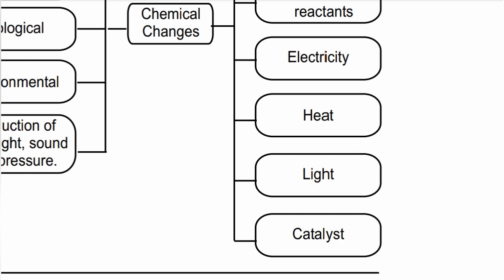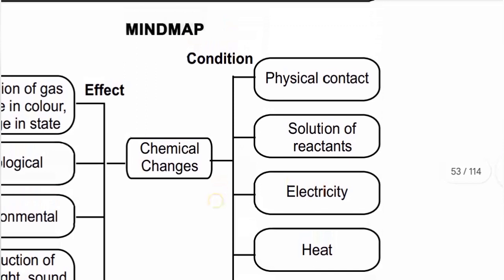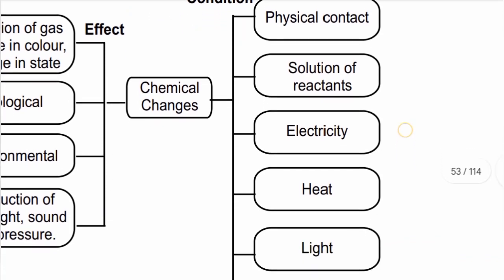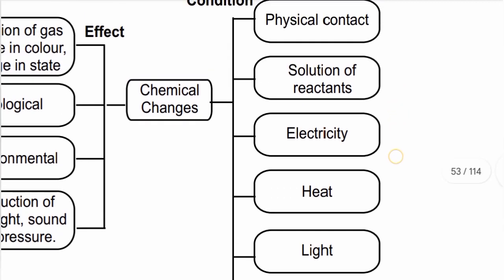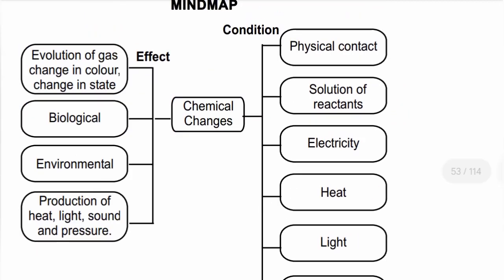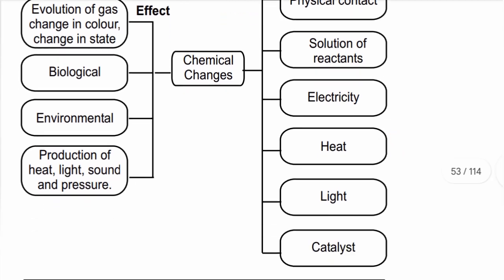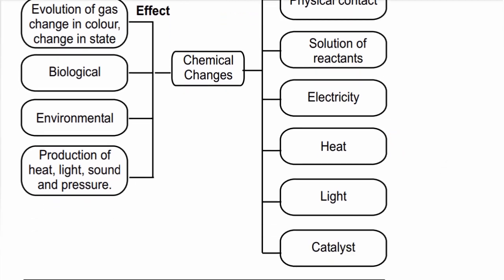So, chemical changes have conditions. The conditions are: number one, physical contact; number two, solution of reactants; third, electricity; fourth, heat; fifth, light; and sixth, catalyst. Then the effects of chemical changes include evolution of gas, change in color, and change in state.